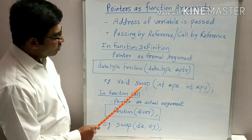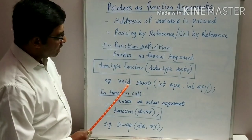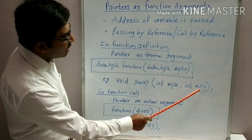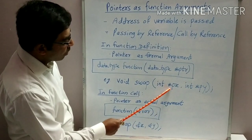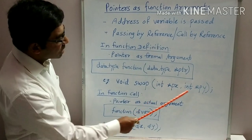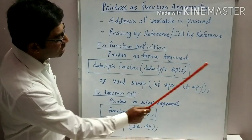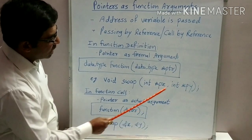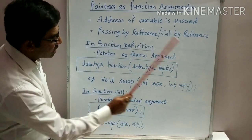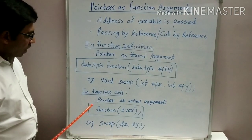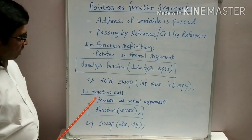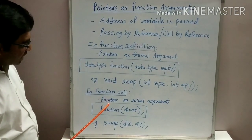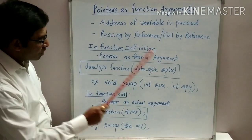Let us see one example: void swap. Swap is a function which returns no value, that is a void function. It has two arguments as two pointers. First is PX and the second argument is PY. Here, as PX and PY are preceded by asterisk or star, they are considered as pointers. While calling the function, in the function call, how to specify the pointer as actual argument?